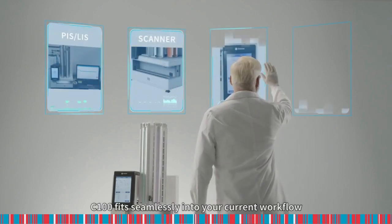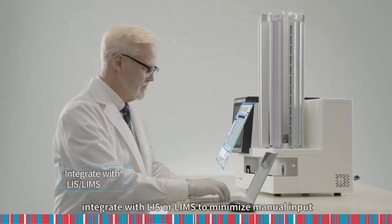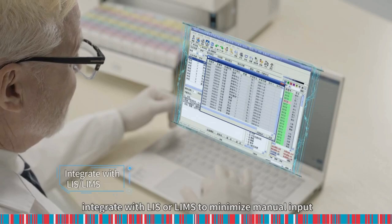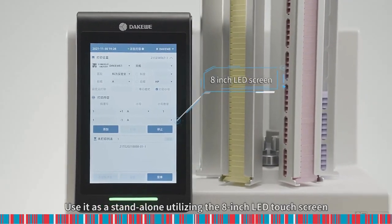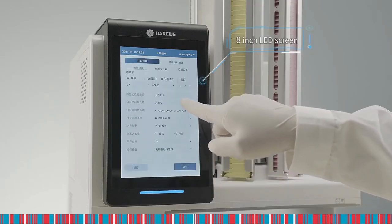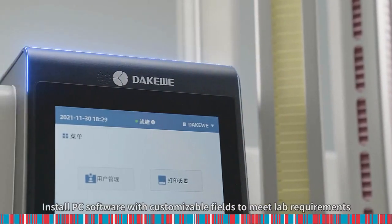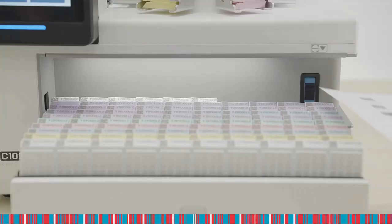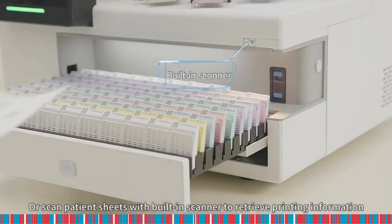C100 fits seamlessly into your current workflow. Integrate with LIS or LIMS to minimize manual input. Use it as a standalone utilizing the 8-inch LED touchscreen. Install PC software with customizable fields to meet lab requirements. Or scan patient sheets with built-in scanner to retrieve printing information.